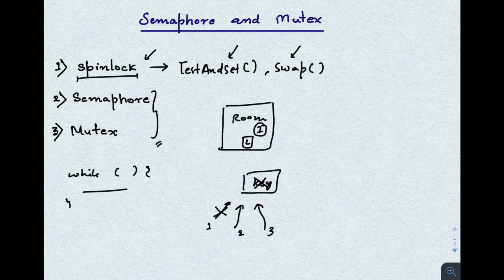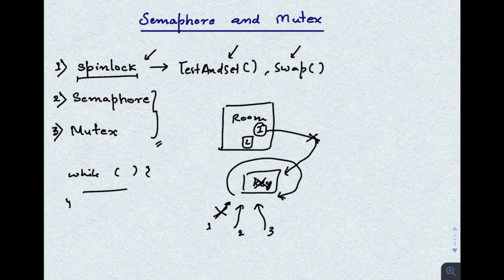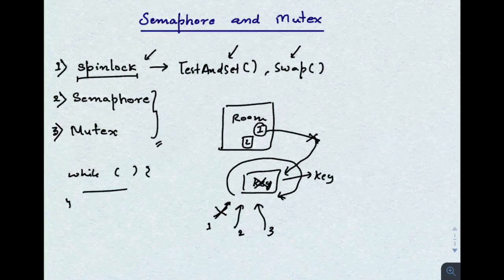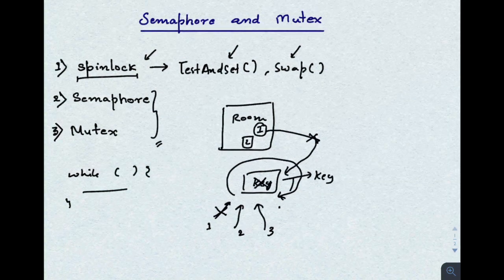The second and third persons keep spinning around the box — waiting for the key. When the first person exits the room, they place the key back. Then the second or third person, whoever finds it first, takes the key and enters the room. This keeps happening — any new person coming must wait here if the key is unavailable. This is spin lock.